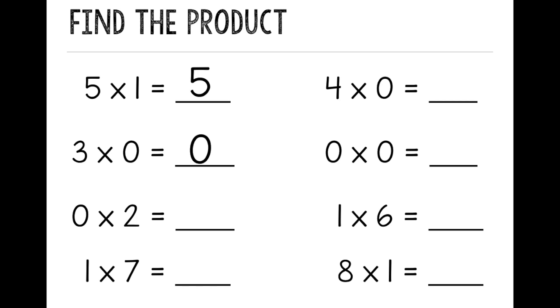Our next problem says 0 times 2, so if I have 0 groups of 2, my zero property tells me that my product is 0. 1 times 7, I have 1 group of 7, so I have 7 things.